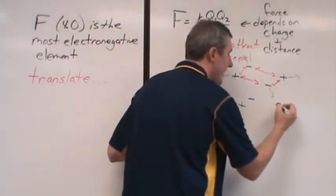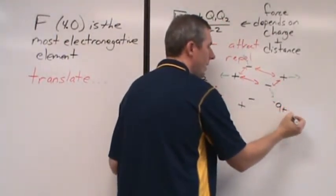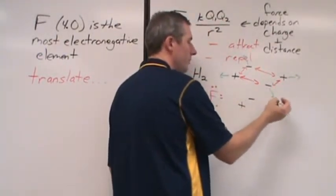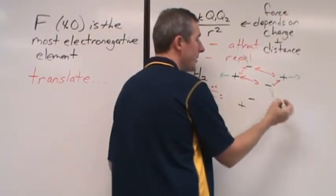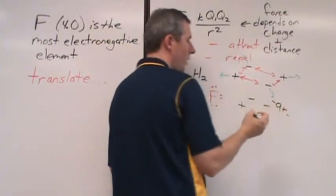What's different about a fluorine? Well, fluorine has nine protons. It has two electrons that are kind of close to those nine protons, and it has seven more electrons that are out and about.